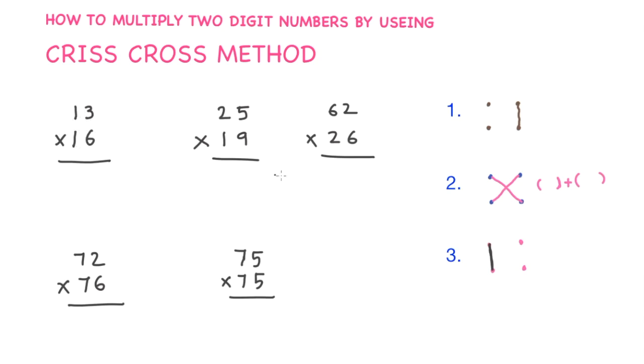In criss-cross method, step 1, we multiply these digits. That means 3 × 6 are 18. As 18 is a two-digit number, you keep 1 aside.